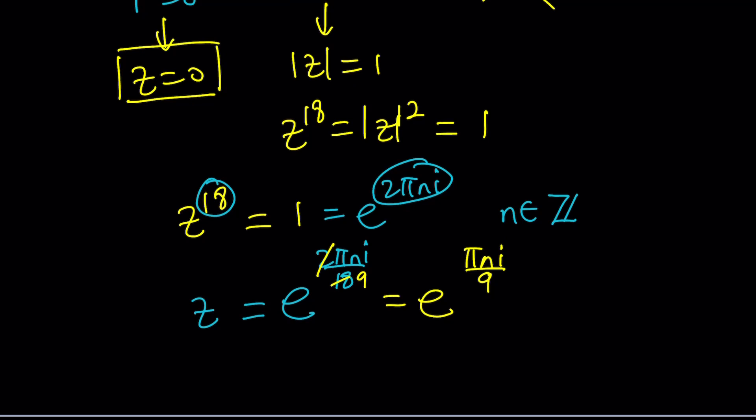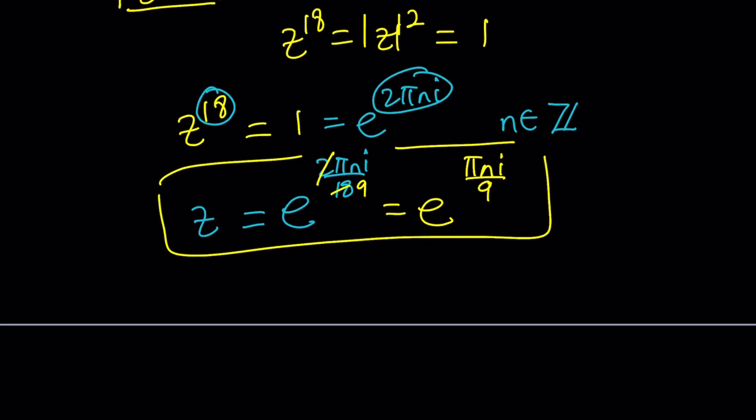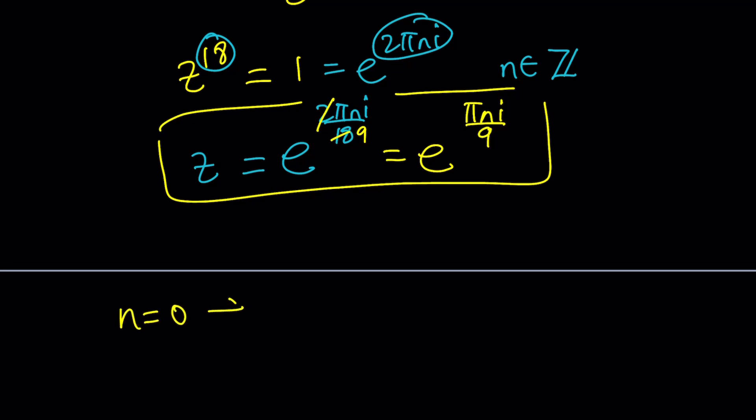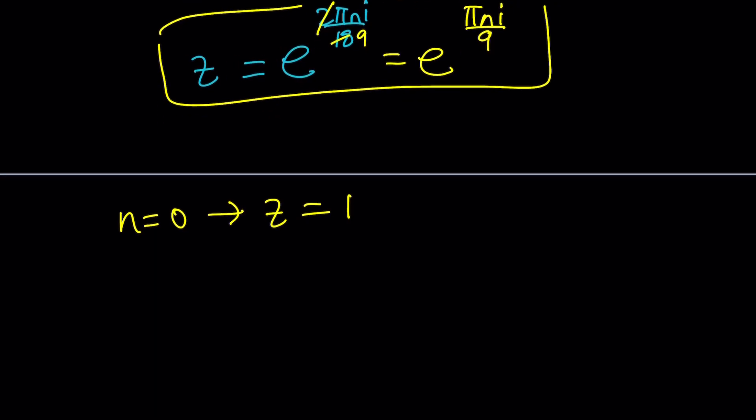Now, we can go ahead and replace n with certain values and find each 18th root. For example, if n is equal to 0, we get Z equals e to the power 0, which is 1. Obviously, Z equals 1 is a solution. If you plug it into the original, you're going to realize that Z equals 1 is a solution. And you could also go by this. Remember when we got Z to the 18th equals absolute value of Z squared? If you assume Z is real, Z equals 1 is going to pop up as a solution.